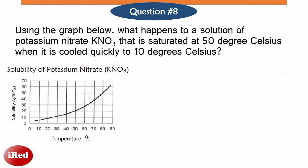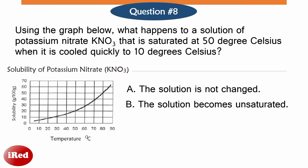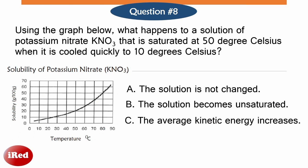Number 8. Using the graph below, what happens to a solution of potassium nitrate that is saturated at 50 degrees Celsius when it is cooled quickly to 10 degrees Celsius? A the solution is not changed, B the solution becomes unsaturated, C the average kinetic energy increases, or D extra solute falls out of solution.